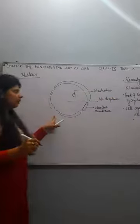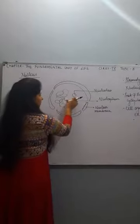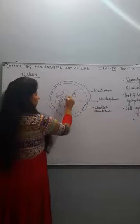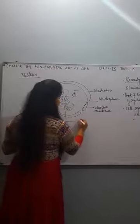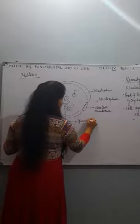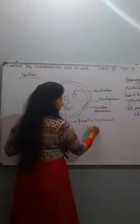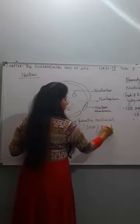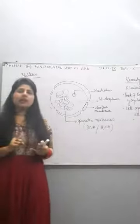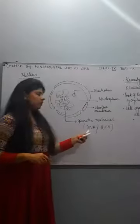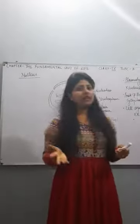Now we will discuss about the genetic material. Genetic material is present inside the nucleus. Genetic material may be DNA or RNA, depending on the organism. In the case of plants and animals, it is DNA. In the case of viruses, you might be aware — the genetic material may differ.